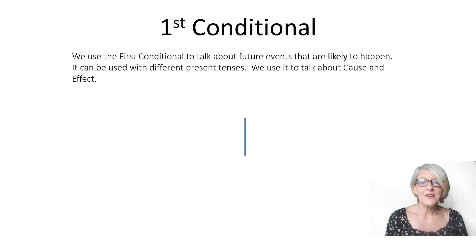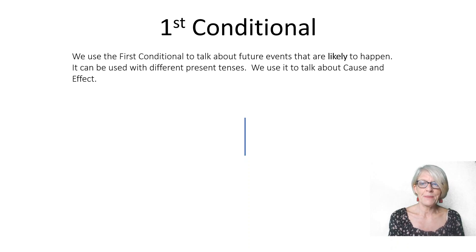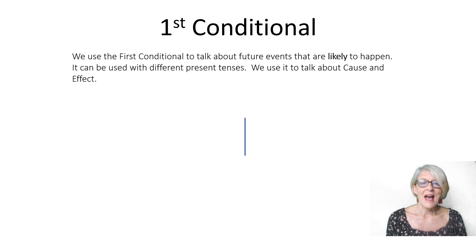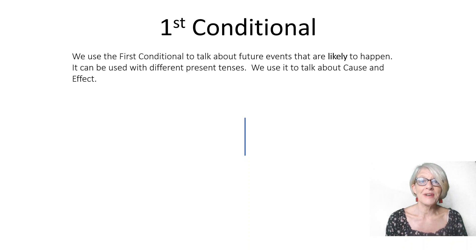We use the first conditional to talk about future events that are likely to happen. It can be used with different present tenses and we use it to talk about cause and effect. Today we're going to focus on using the present simple tense.